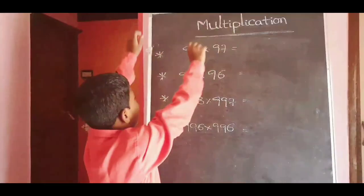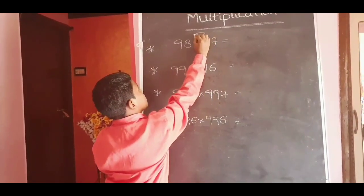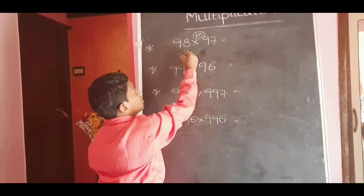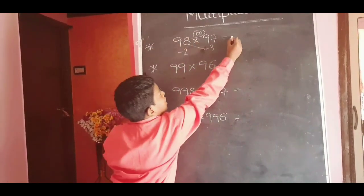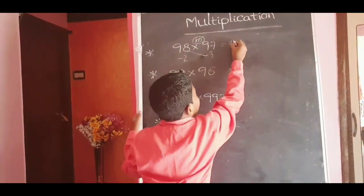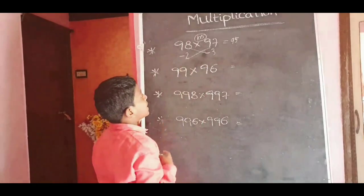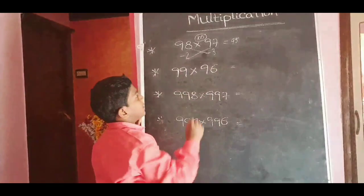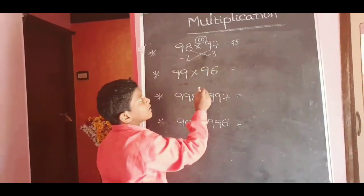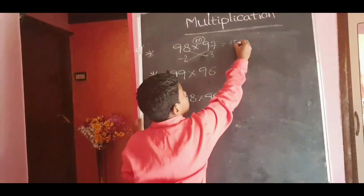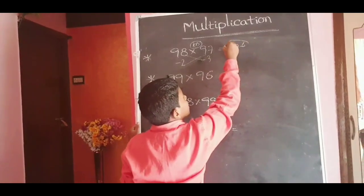Next: 98 into 97. This is nearest to 100. 98 minus 2; 97 minus 3. 98 minus 3 equals 95. 97 minus 2 equals 95. After, these two should multiply: minus into minus is plus. 2 into 3, 2 threes are 6. For 100, two zeros means two digits: 06. The answer is 9506.